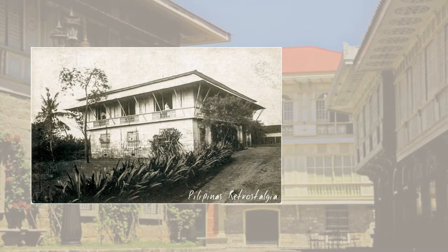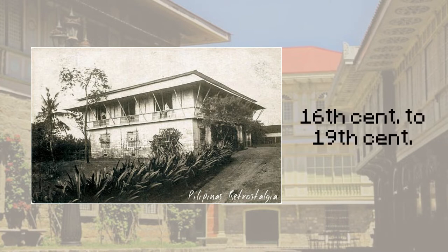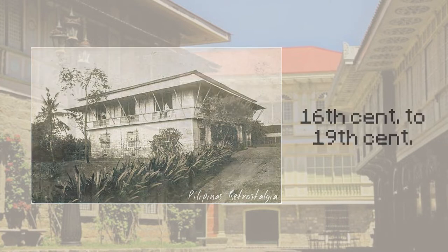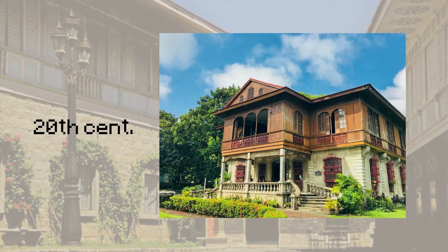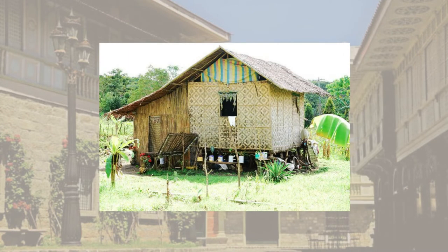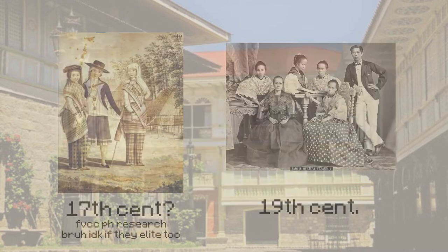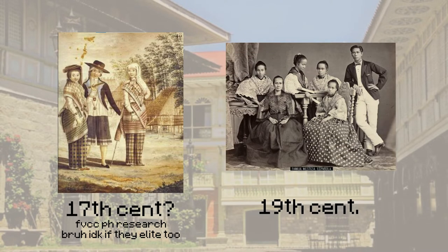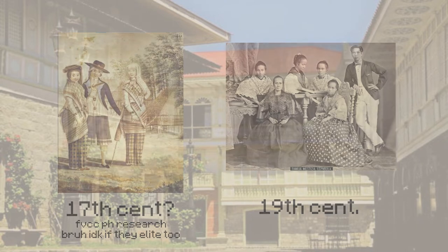Bahay na Bato, also mostly known as ancestral house, is a type of house in the Philippines that is prevalent during the Spanish colonial era as well as during the early American colonial era. It is acknowledged that the Bahay na Bato is derived from the local architecture of Bahay Kubo. The Bahay na Bato is most associated with elites as they obviously can afford these houses and they can also personalize the facade of their house.